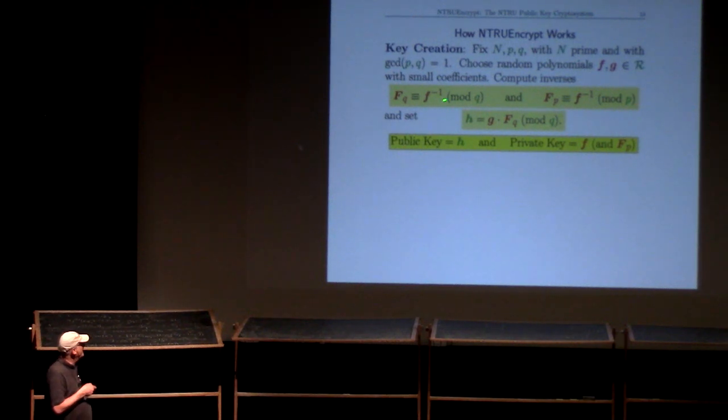She computes the inverse of the little f in the mod q ring and the mod p ring. What happens if those inverses don't exist? I said they usually exist. Well, if they don't exist, she just goes back and picks a different f. It won't take her very long to find one that works.